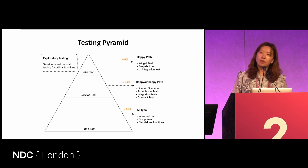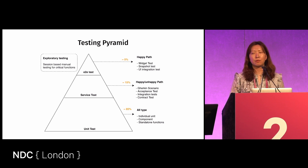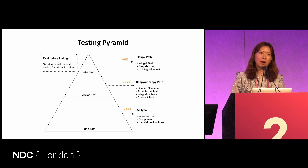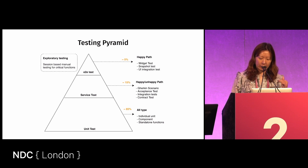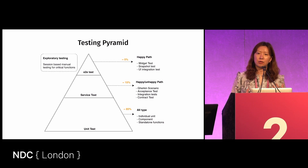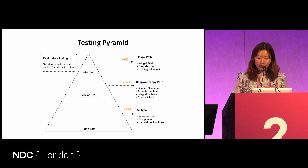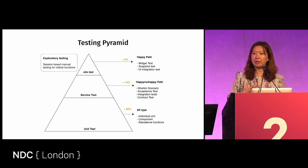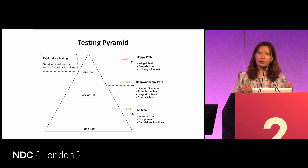Once you've done API design and start implementing your project, the next thing — please don't avoid this — is to think about how to test your API. There are different ways to test your API. Usually this part is in the middle of the service test layer, which forms roughly 15 to 20% of your project. You do happy and unhappy paths here. You can do API tests, contract tests, and integration acceptance tests. All of those will actually test different degrees of your API design.